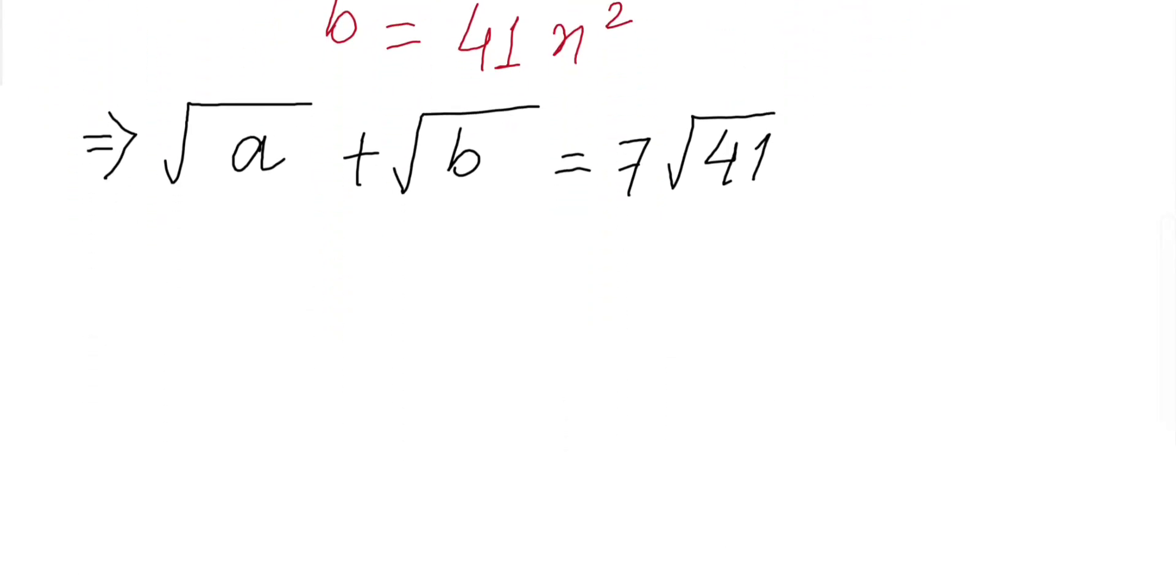If we substitute our desired values, so this was 41m², 41n², this equals 7 square root of 41. Now why I chose a and b equals 41m² and 41n²?